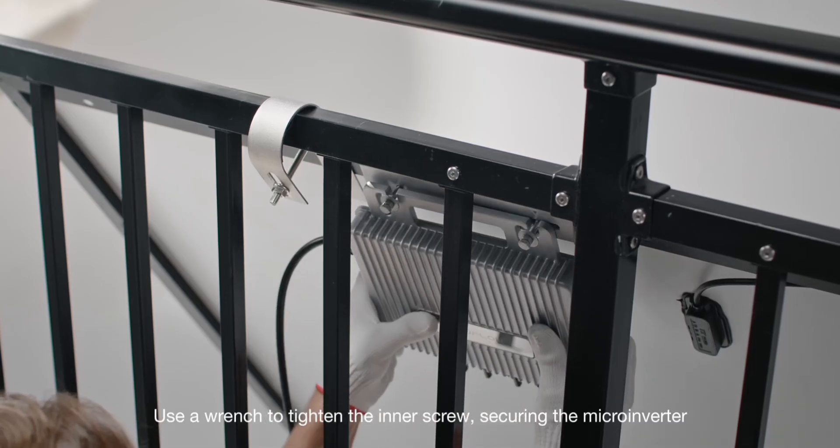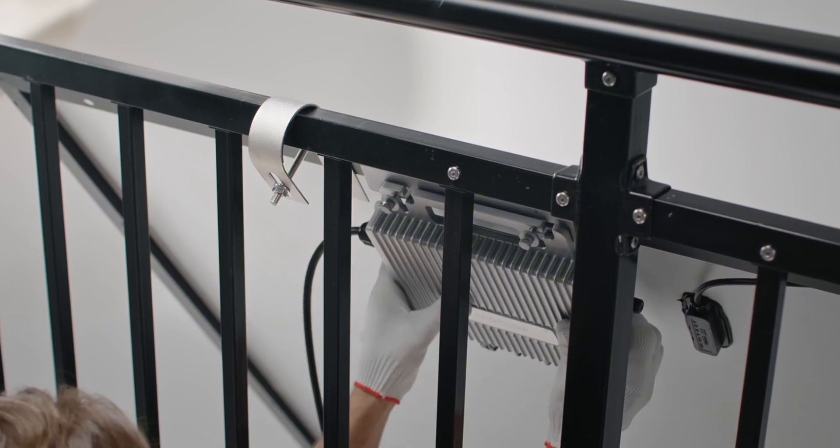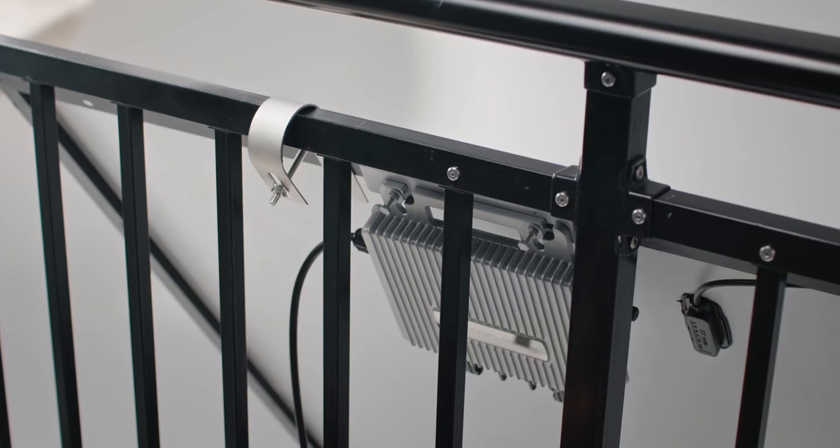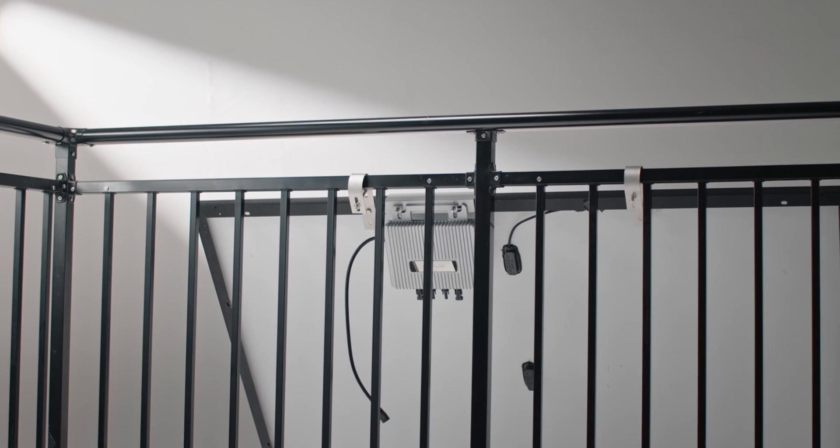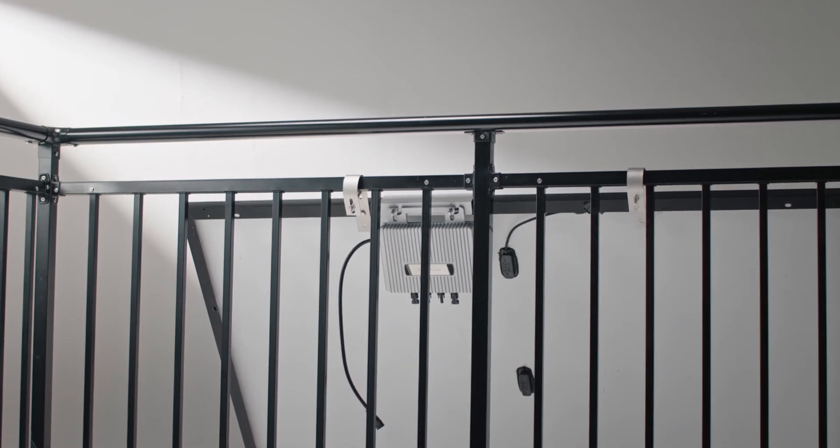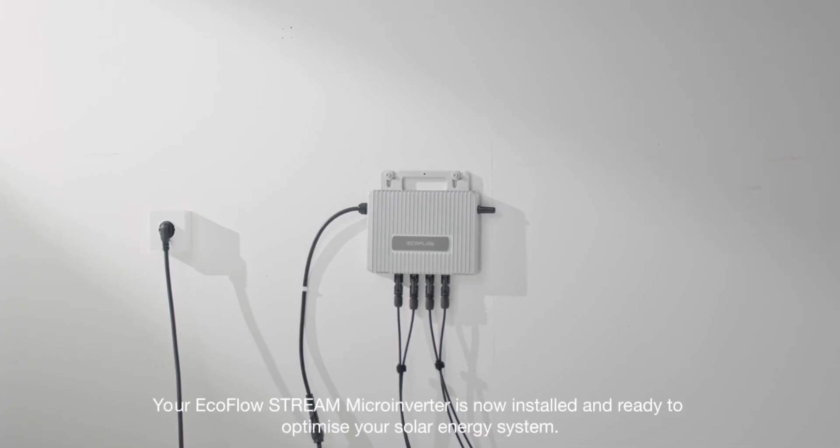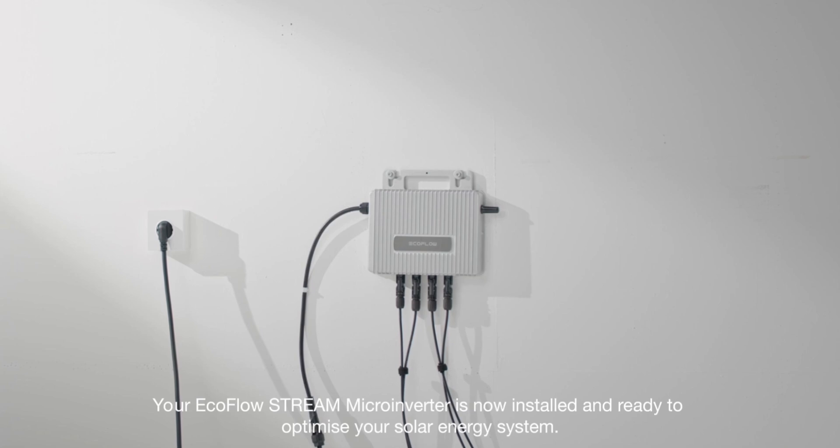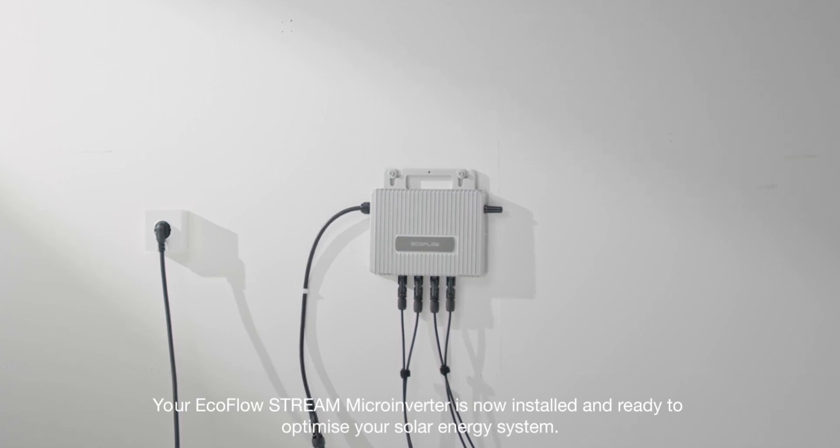Use a wrench to tighten the inner screw, securing the microinverter. And that's it. Your EcoFlow Stream microinverter is now installed and ready to optimize your solar energy system.